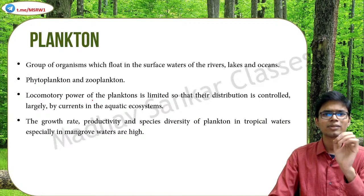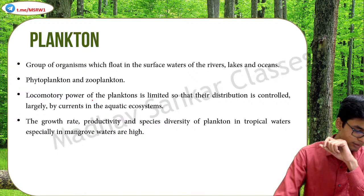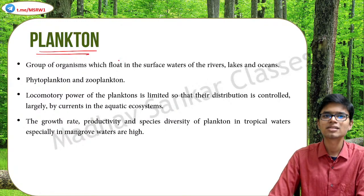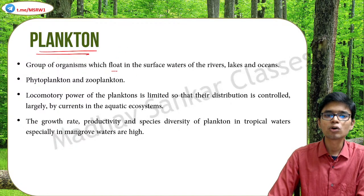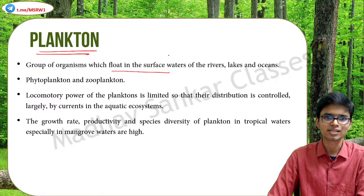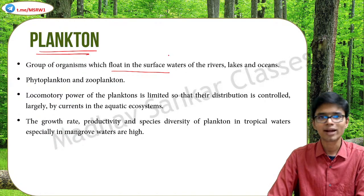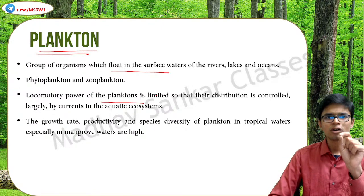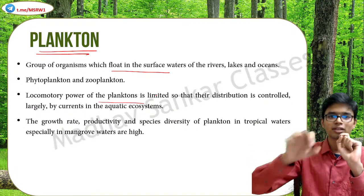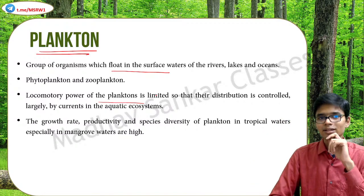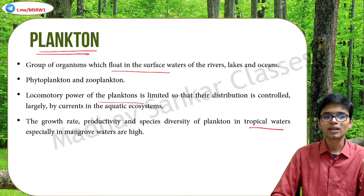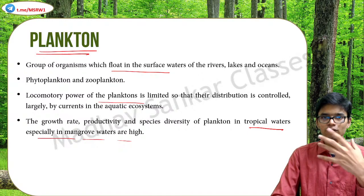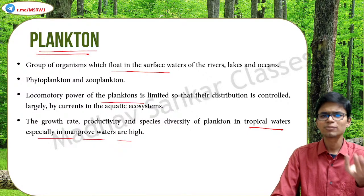Now a very small topic: marine organisms. Plankton are a group of organisms which float on the surface of water bodies like rivers, lakes, and oceans. Planktons are of two types: phytoplanktons and zooplanktons. The locomotory power of planktons is very limited because they are very small, so usually they flow with the water current. The growth rate, productivity, and species diversity of plankton in tropical waters especially mangrove waters are very high.